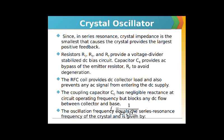The RFC coil provides DC collector load and also prevents any AC signal from entering the DC supply. The coupling capacitor CC has negligible reactance at the circuit operating frequency but blocks any DC flow between collector and base. The oscillator frequency is equal to the series resonance frequency of the crystal, and it is given by F equals 1 divided by 2π times the square root of LC.